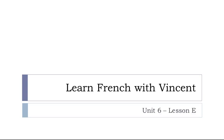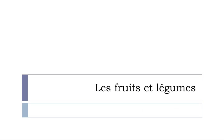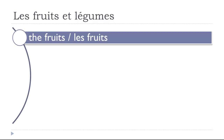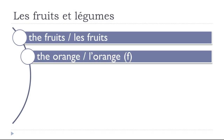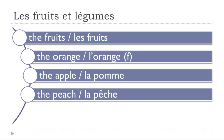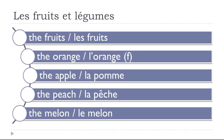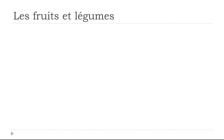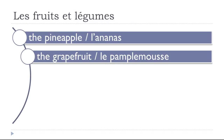Bonjour à tous and welcome to Learn French with Vincent. This is Unité 6, Leçon E — quite an important lesson because we'll see vocabulary for les fruits et légumes — fruits and vegetables. Les fruits: l'orange (feminine), la pomme (apple), la pêche (peach), le melon (melon).